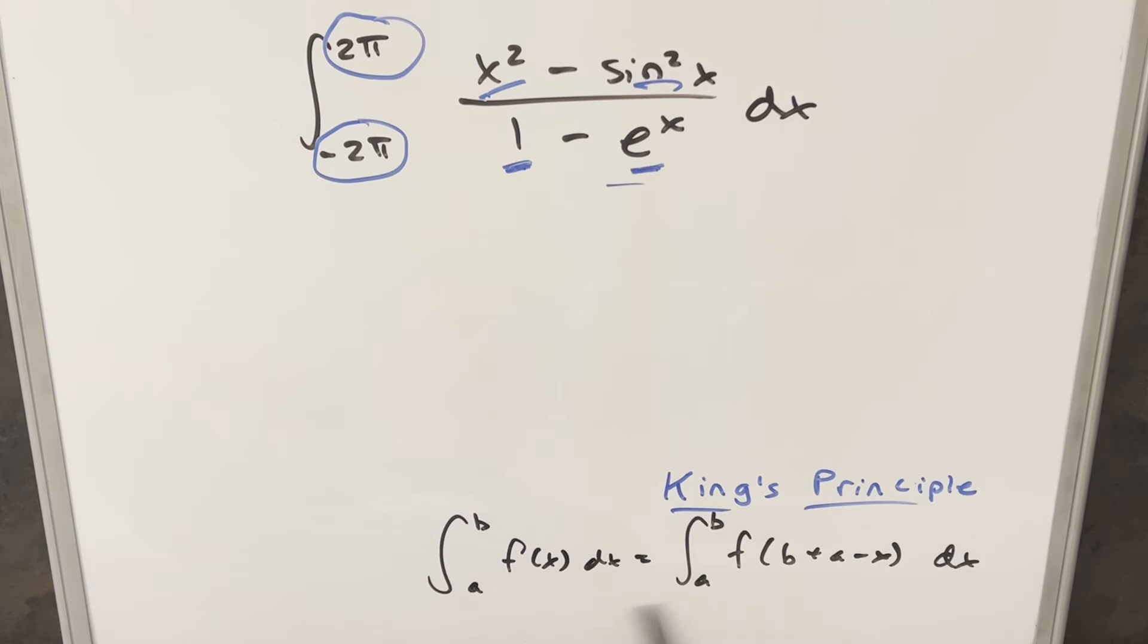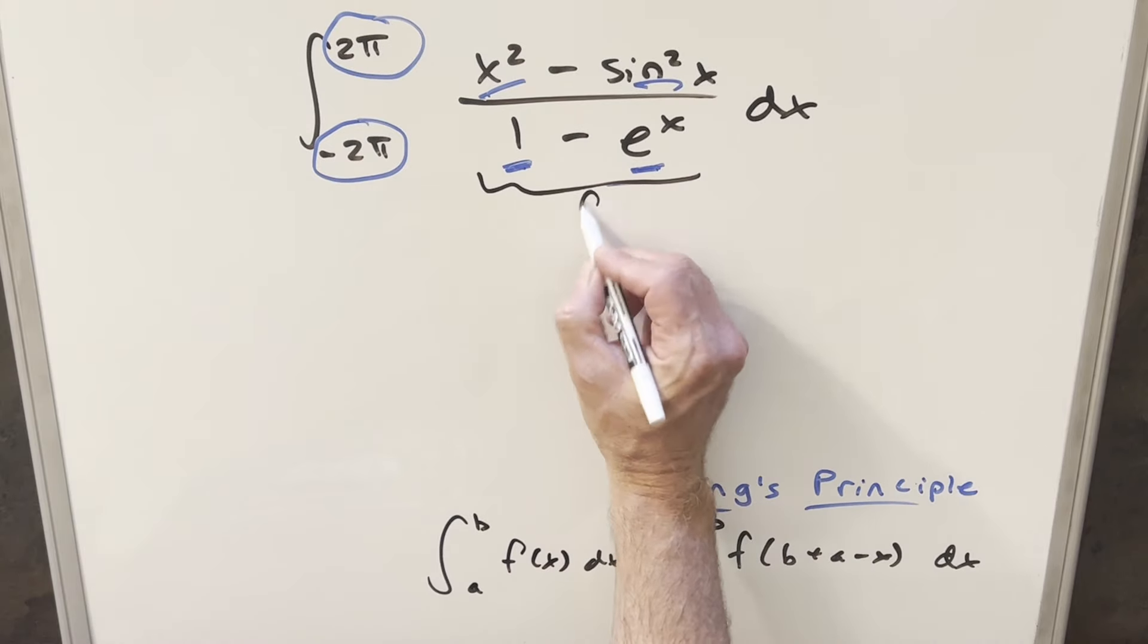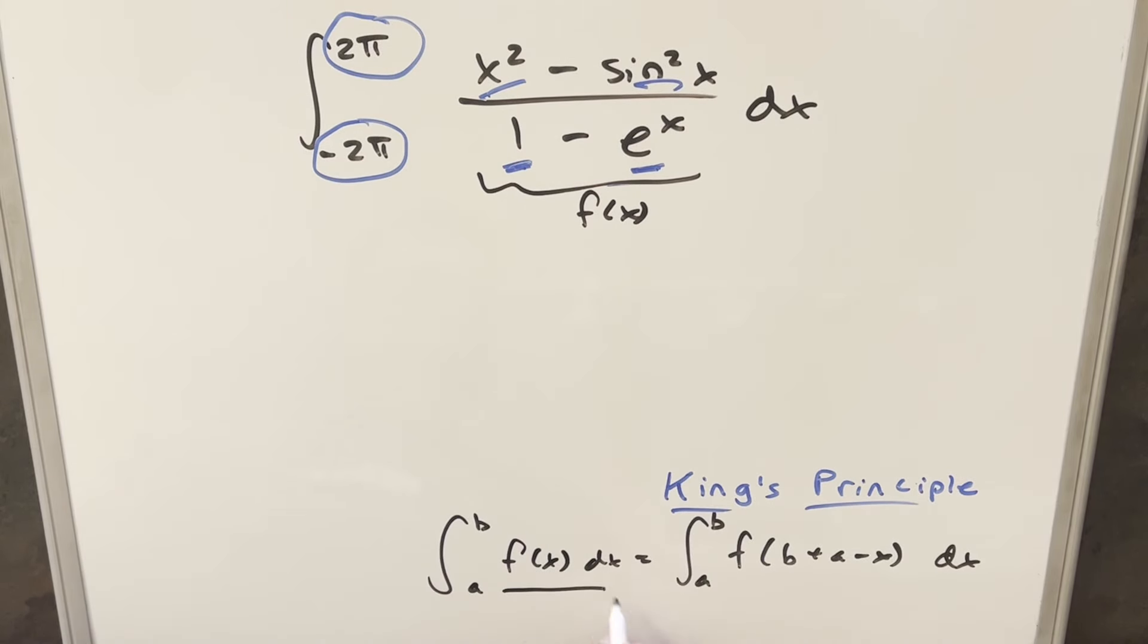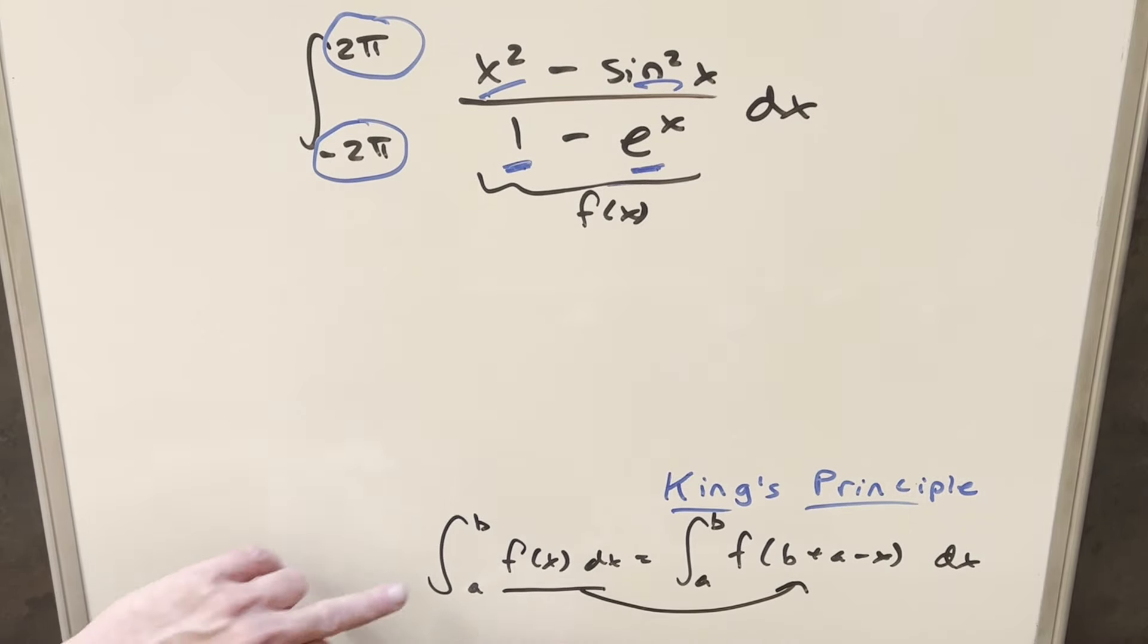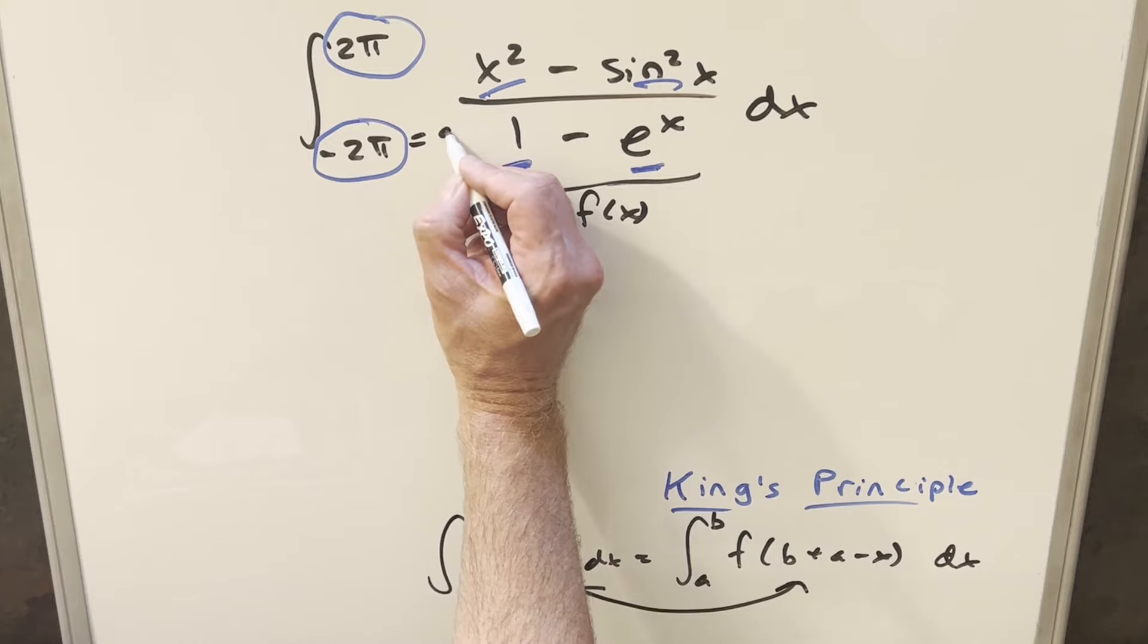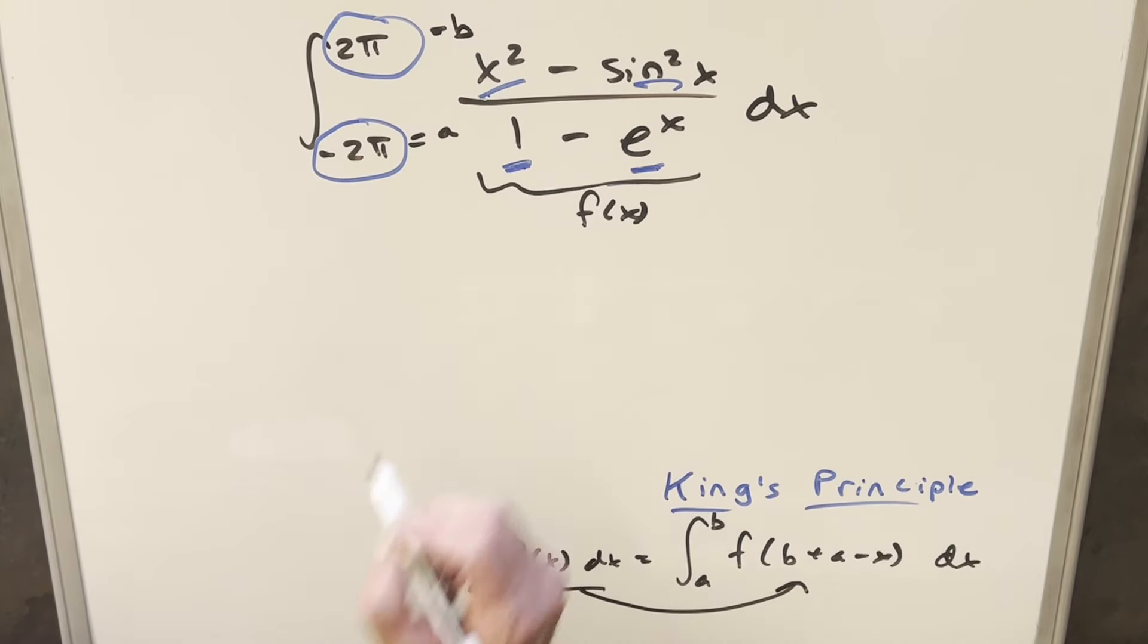Looking at our formula for King's Principle down here to the right, it's going to allow us to transform our integral. If this right here is our f(x) here, we get to transform it into this form, and hopefully that helps us. Now, the reason I like to do it in this case where we have the symmetric bounds, for this a and b value, right, a is our lower bound, b is our upper bound.